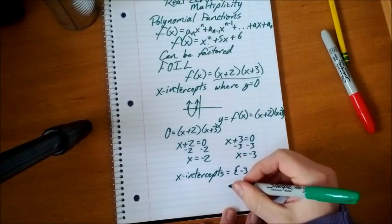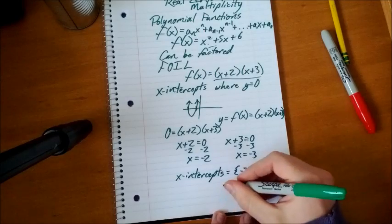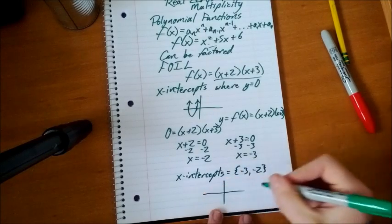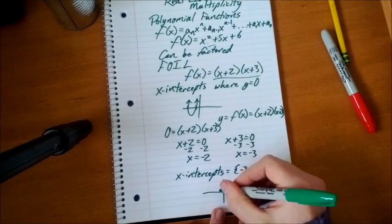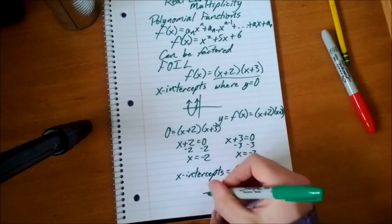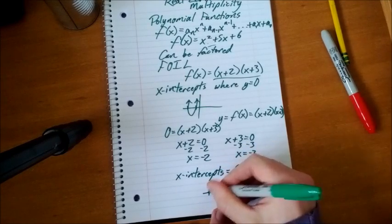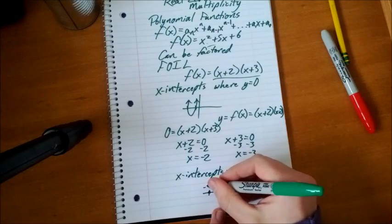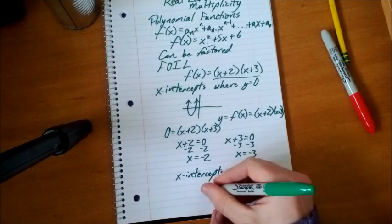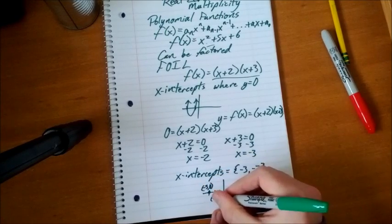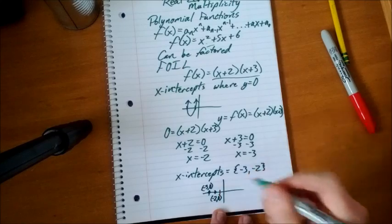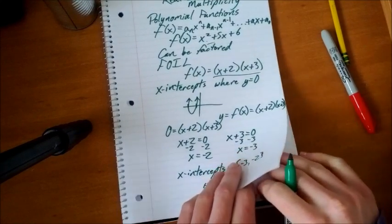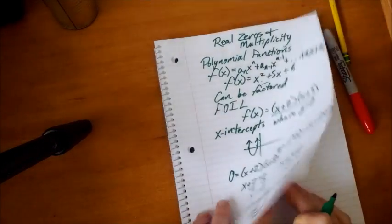Let's see. We have our graph. Negative 1, negative 2, negative 3. We have a point there and a point there. These are our x-intercepts. So this is (-3, 0) and (-2, 0). Pretty cool, huh? I hope you're as excited about this as I am.